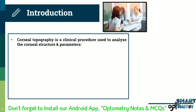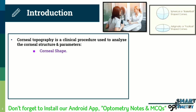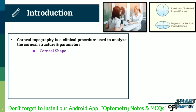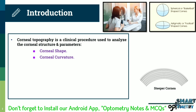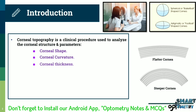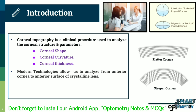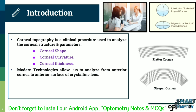Corneal topography is a clinical procedure used to analyze corneal structures and parameters like corneal shape — whether the cornea is spherical or cylindrical — corneal curvature, whether the cornea is steeper or flatter, and corneal thickness. Modern technologies allow us to analyze from the anterior cornea to the anterior surface of the crystalline lens.